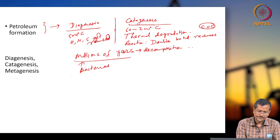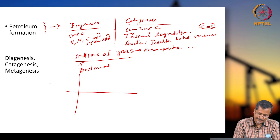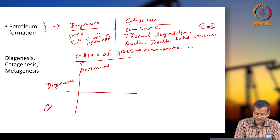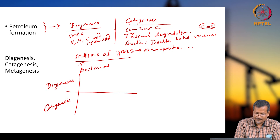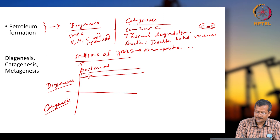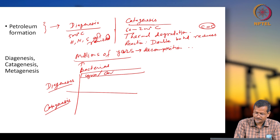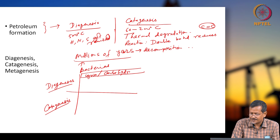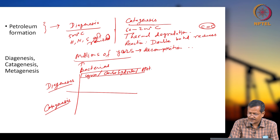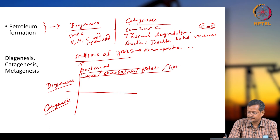This decomposition occurs over millions of years and is helped by bacteria. Initially you take lignin, carbohydrate, protein, and lipid as the starting organic materials.